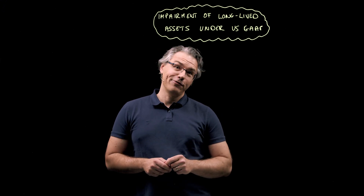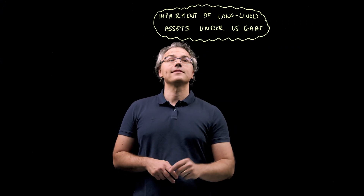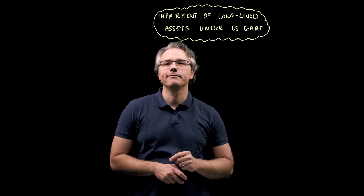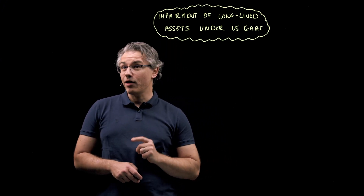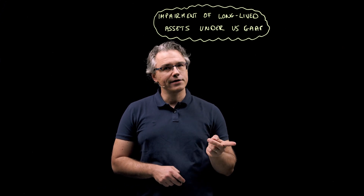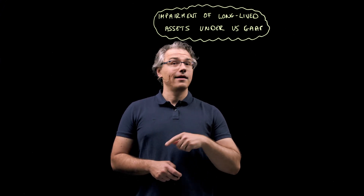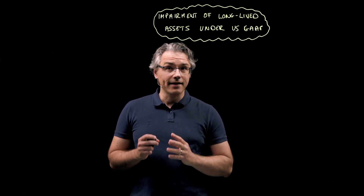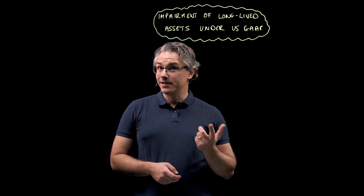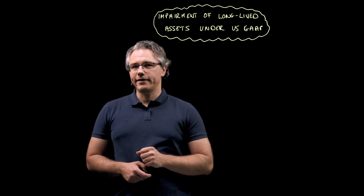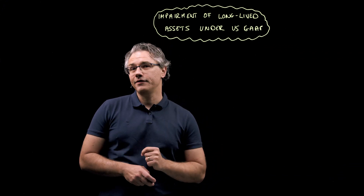In this video, we're going to go through a CFA Level 1 style question on the impairment of long-lived assets under US GAAP. This is the second question in a row on the topic of impairment. In the previous one, we explored how impairment works under IFRS. This one is based on exactly the same scenario, the same data, just a different framework — US GAAP. Be sure to watch that earlier recording as well; you'll find the link to it below in the video description.